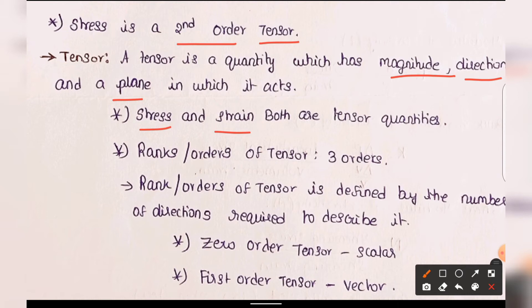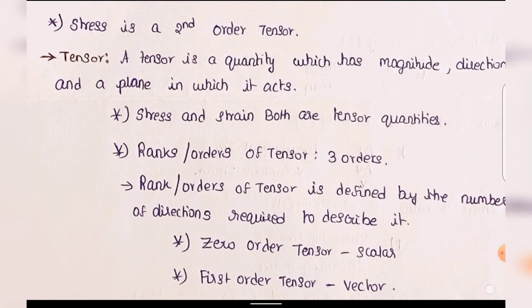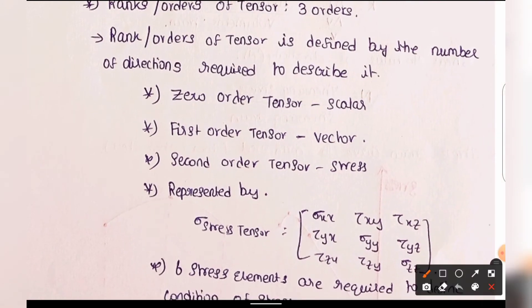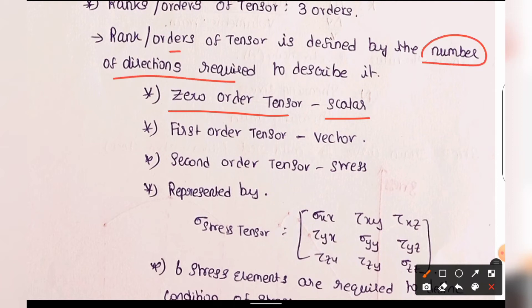Tensor quantities have a rank or order. There are three orders: zero order, first order, and second order. In general engineering mechanics, we deal with scalar quantities and vector quantities. Zero order tensors are scalar quantities — they only require magnitude to describe them, with no direction needed.